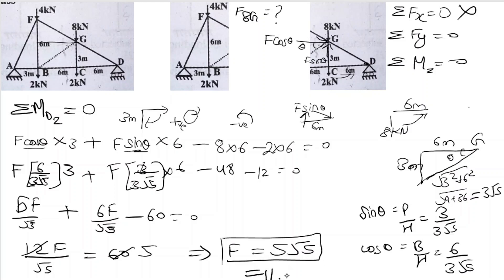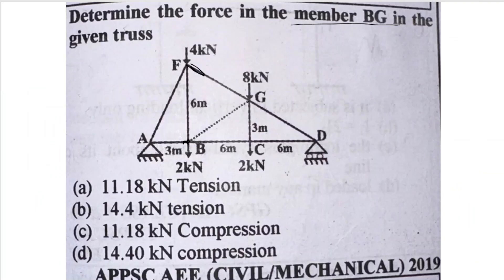If we evaluate 5 root 5, it equals 11.18 kilo Newtons. And since we determined earlier that member BG is compressive, this value is compressive.